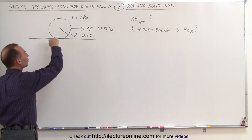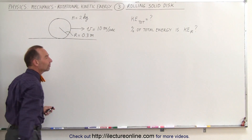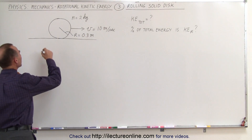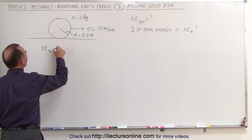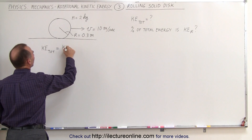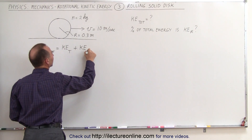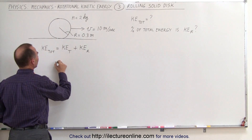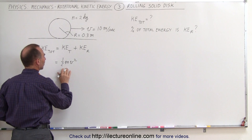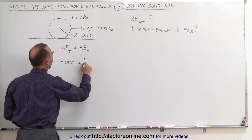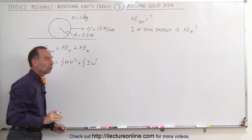Notice that the disk is not just rotating in place but it's also moving. It has a translational velocity of 10 meters per second, which means that the total kinetic energy is equal to the sum of the translational kinetic energy plus the rotational kinetic energy. This is equal to one half mv squared plus one half I omega squared.